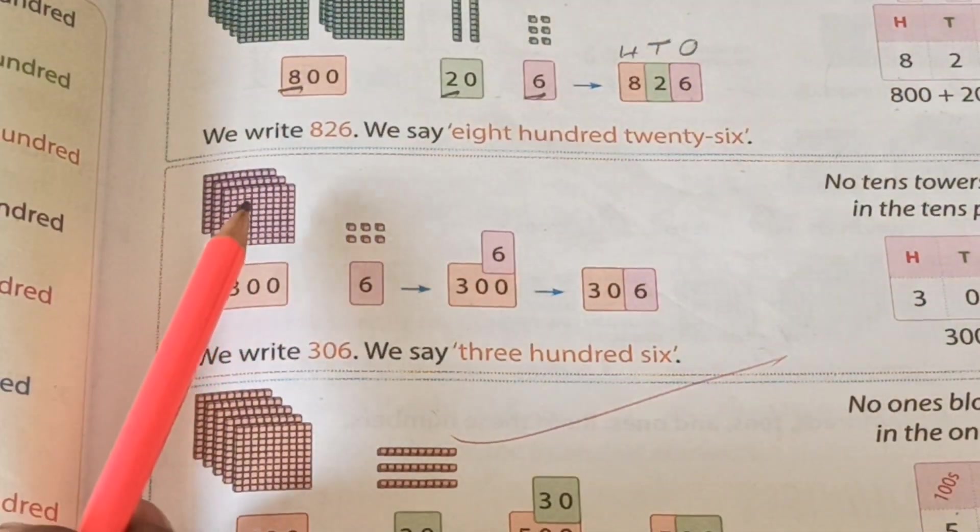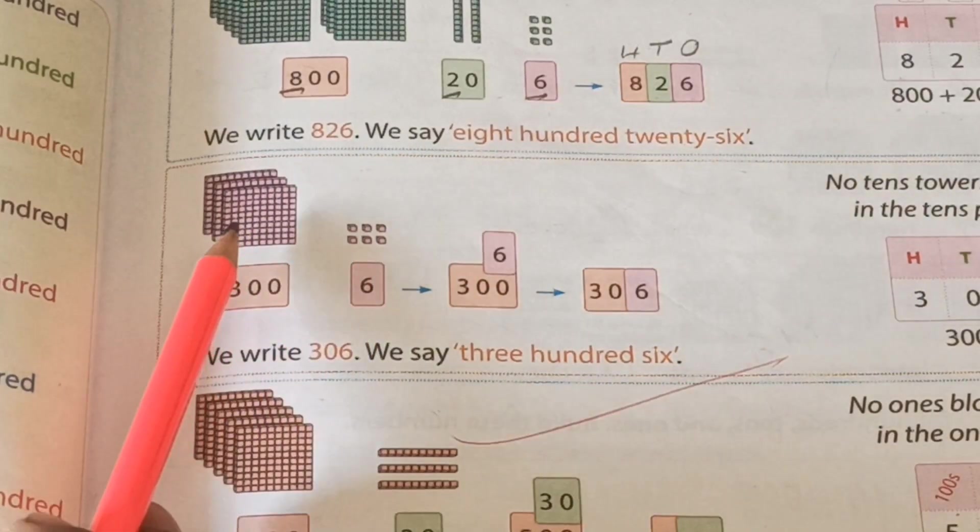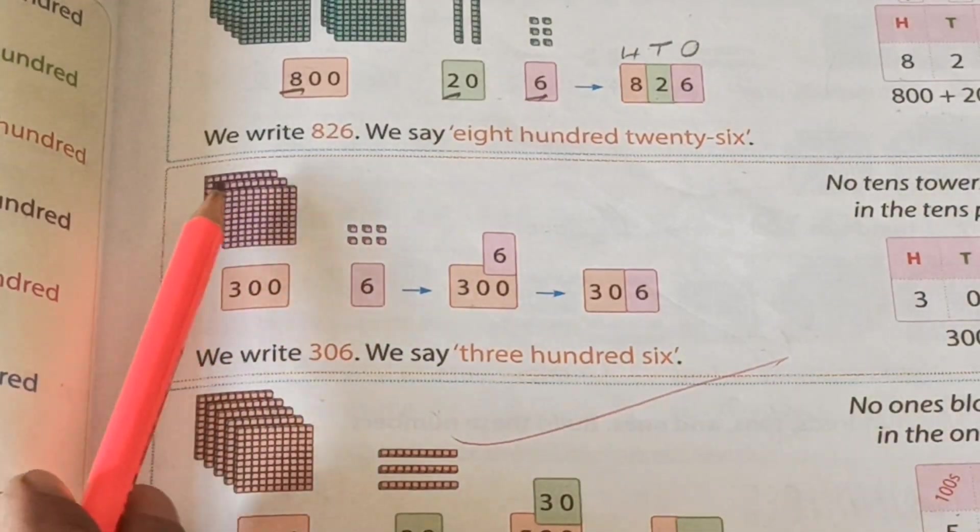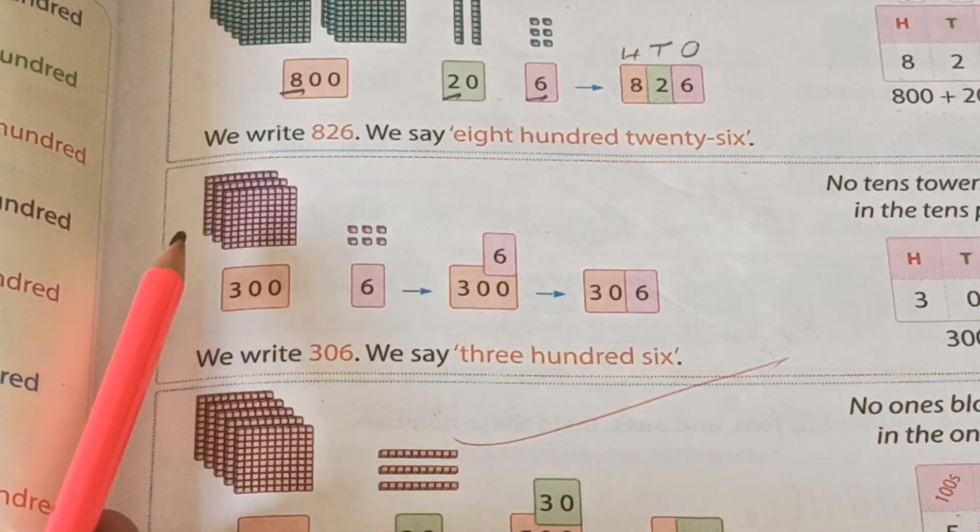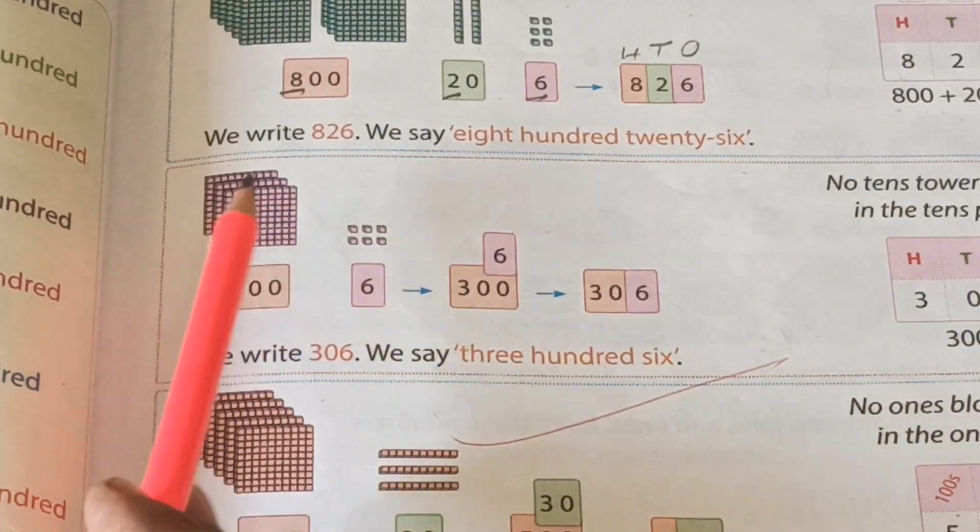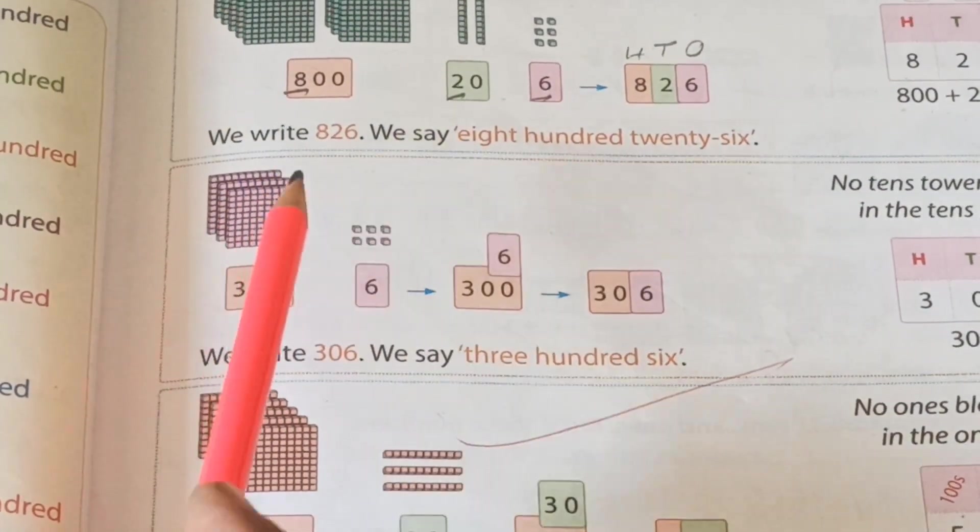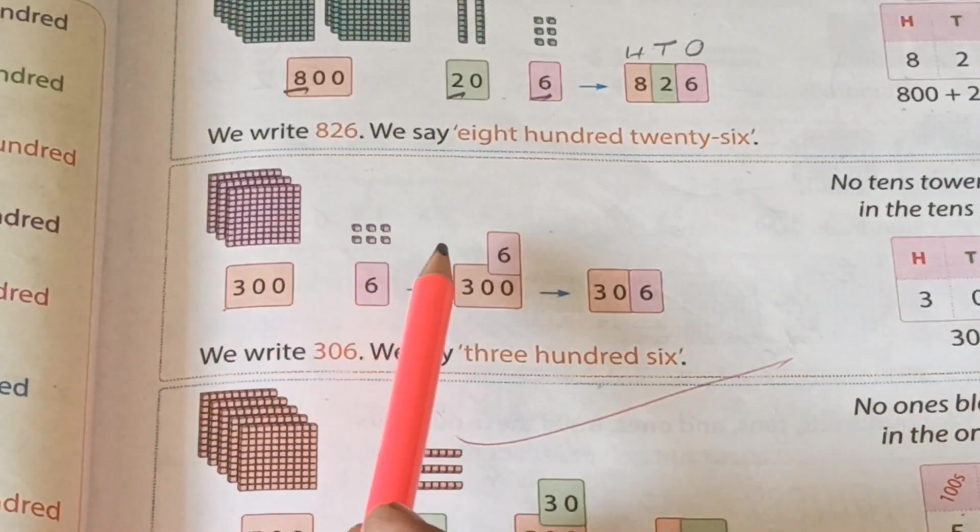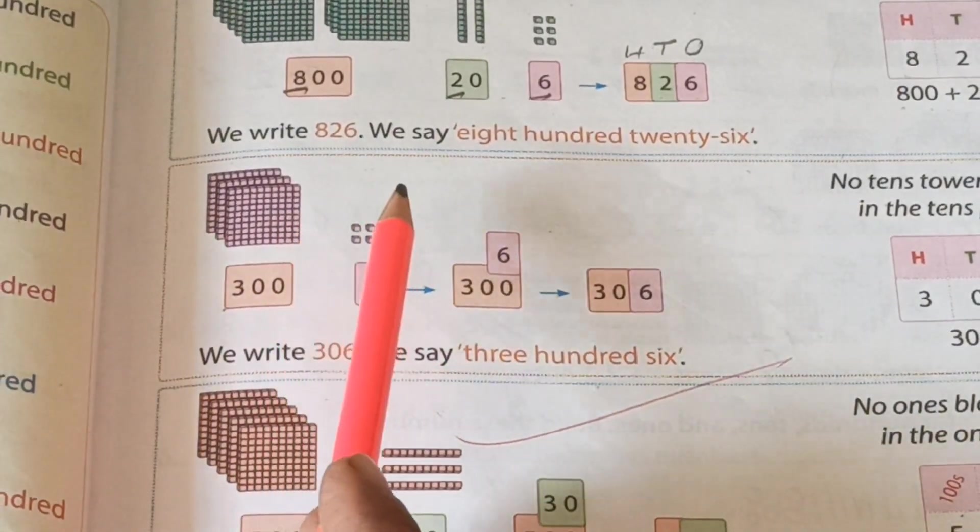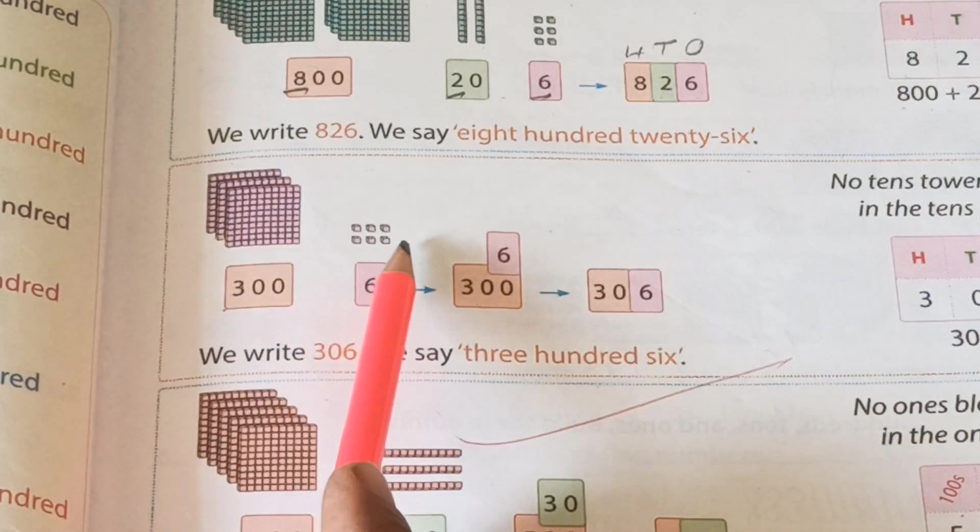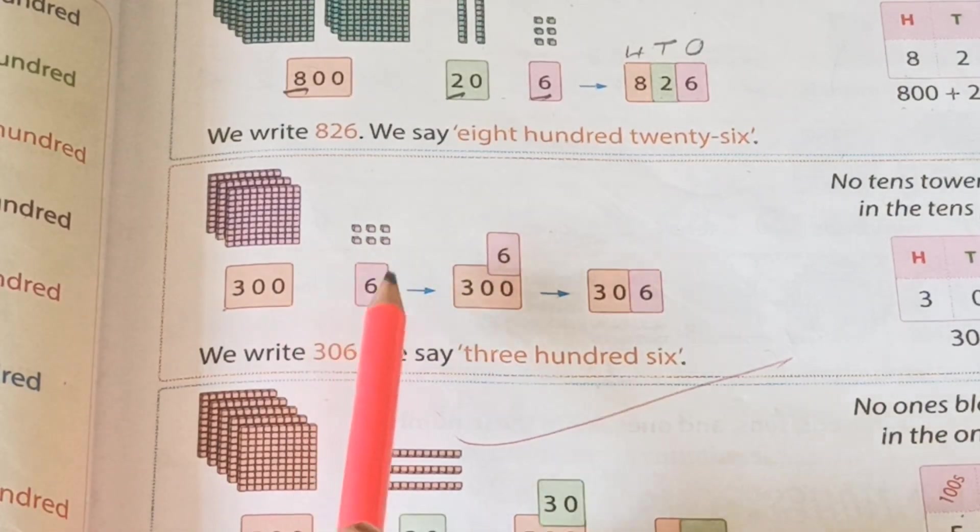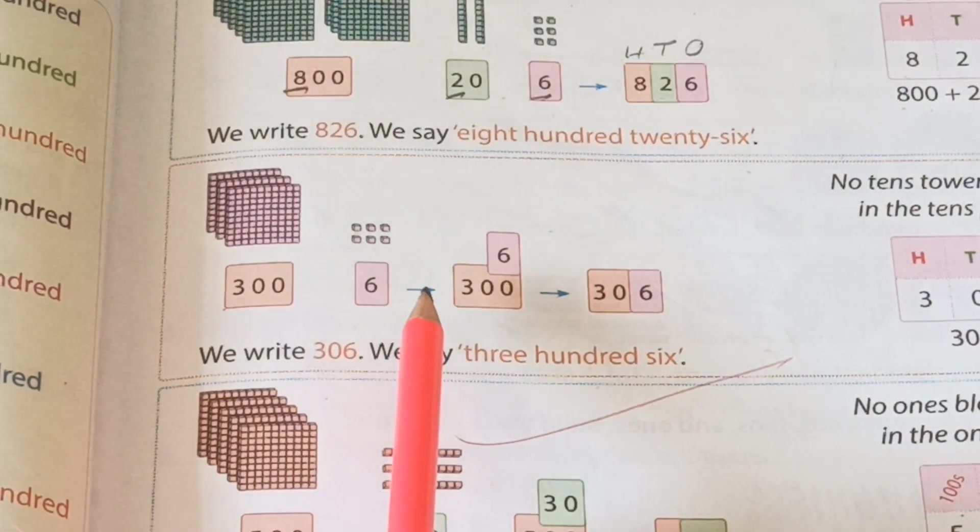See, how many buildings here? 1, 2, 3. One building, this one square block, represents 100. Then how many here? 1, 2, 3. So, 300. How many tens here? Nothing. And how many ones? 1, 2, 3, 4, 5, 6. Then, how do we form numbers?